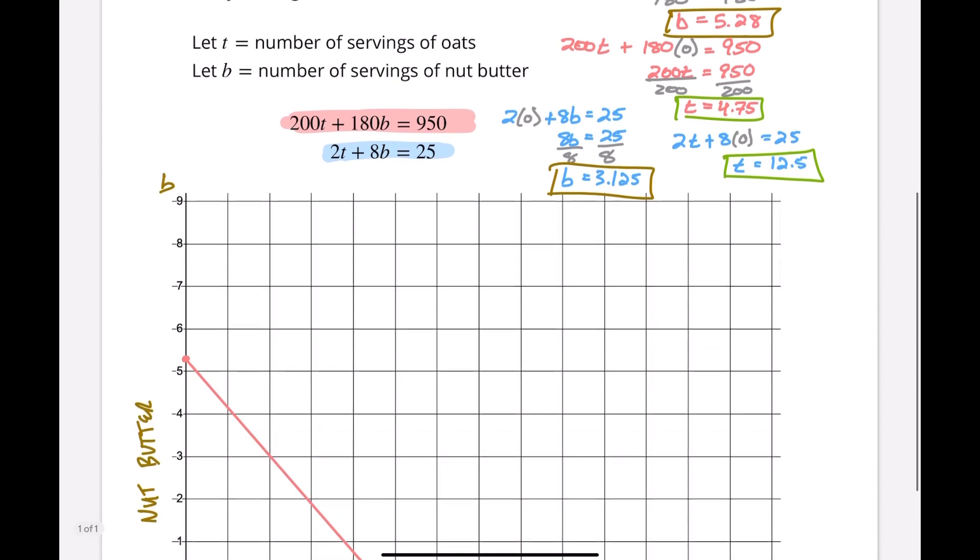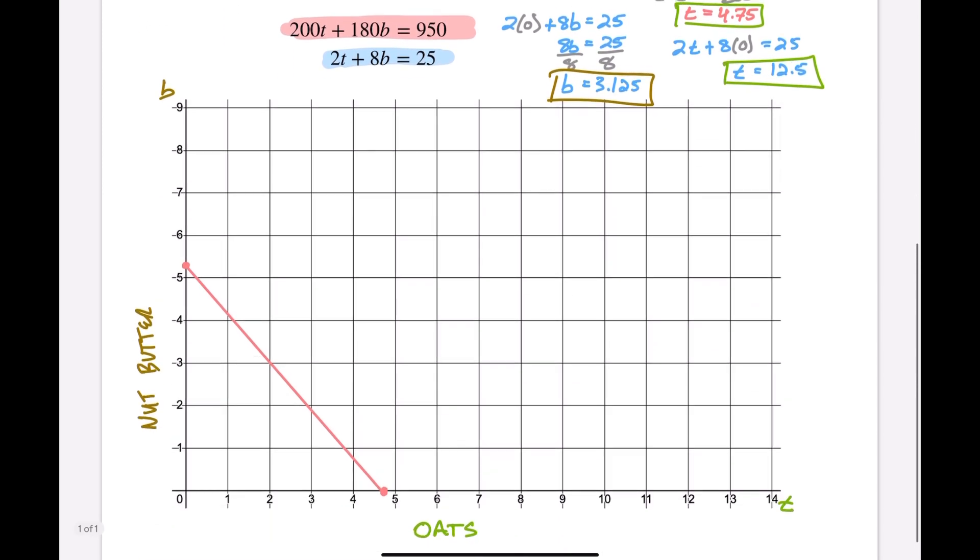So b is 3.125, I'm going to put it here close to 3. T is 12.5, so I'm all the way over here. Let's see if I can draw a straight line here. Come on technology, help me out. All right, there we go.